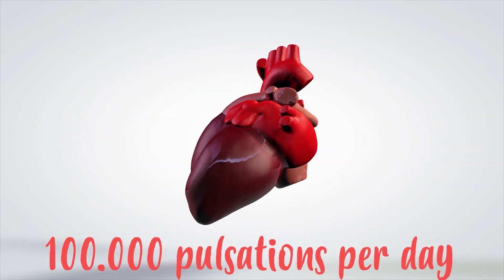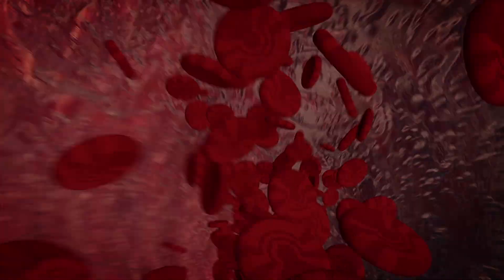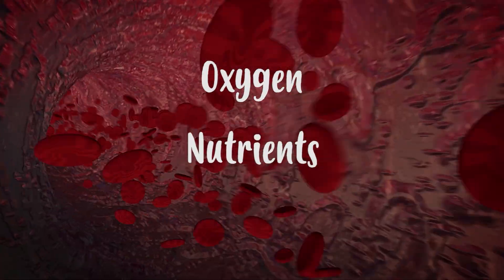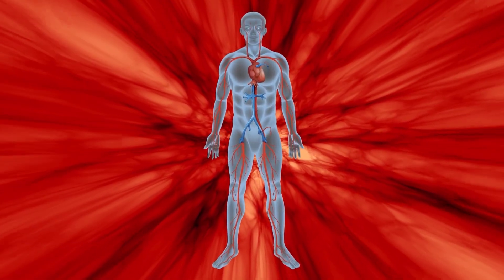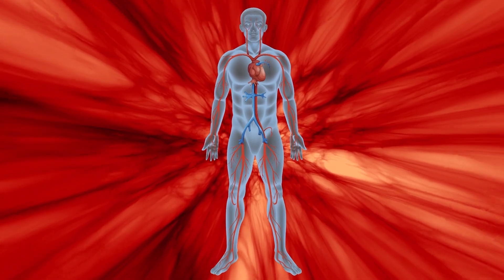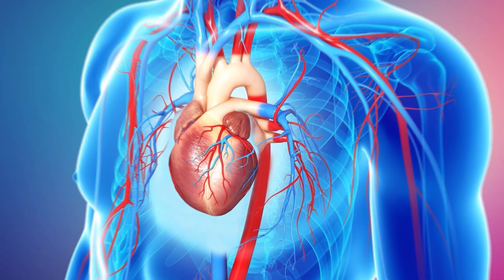The heart has the main role in making sure that blood travels around the body. With its 100,000 pulsations per day, it ensures that blood circulates throughout our body, distributing oxygen and nutrients into our cells. Now let's start a journey through the circulatory system to understand it much better.